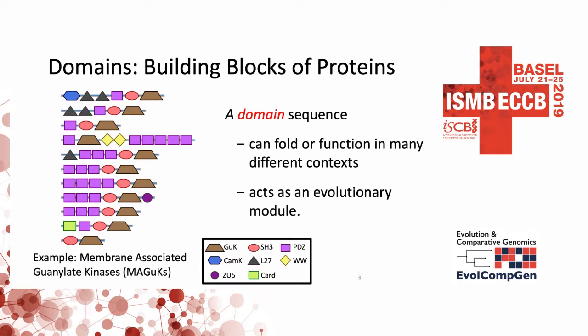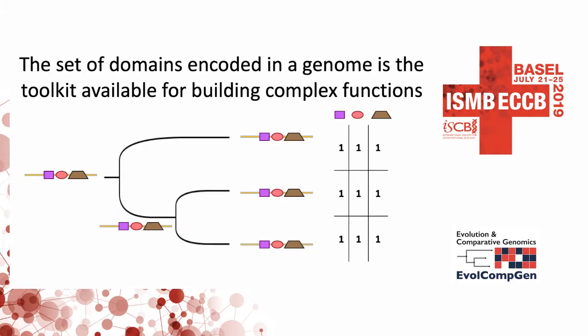One of the key properties of a protein domain is that the sequence will fold into the characteristic structure in many different contexts. Because of this property, they act as modular building blocks that combine in different ways to produce varied protein functions. We can represent the genomic domain content by a table showing the domain families encoded in present-day genomes as well as the copy numbers of each domain. This table provides a measure of the protein function potential encoded in the genomes without requiring gene or ortholog prediction.